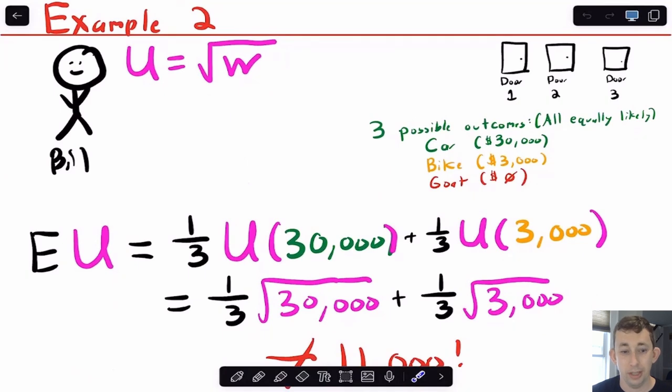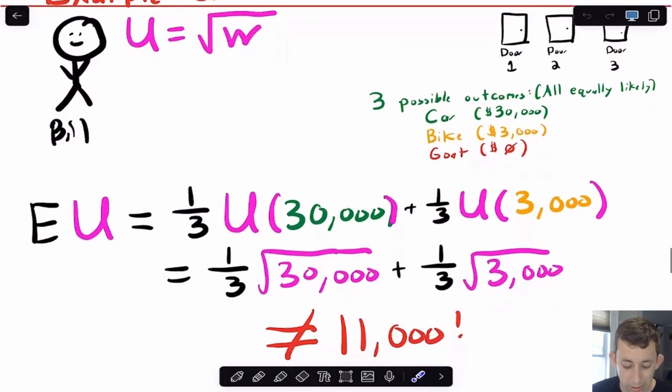If we think about this three door example again, now the expected utility is one out of three times the utility of 30,000 plus one over three times the utility of 3,000 plus one over three times the utility of zero. Utility of zero is just zero, so I'm not including it here. We get one third times the square root of 30,000 plus one third times the square root of 3,000, which is not going to be 11,000.